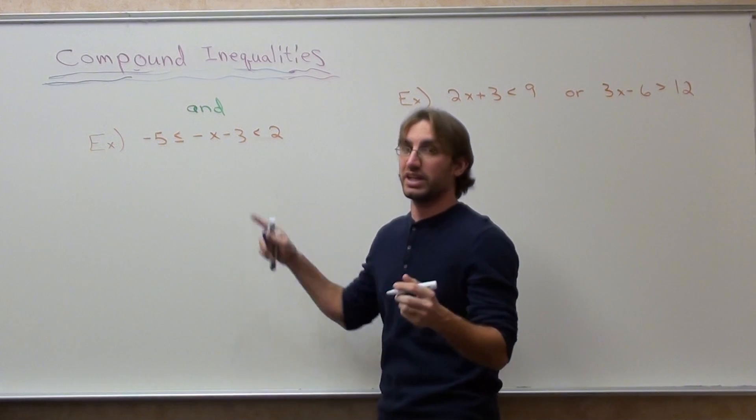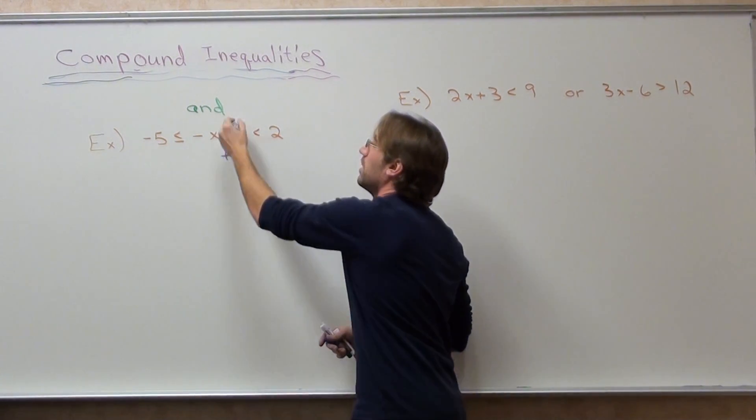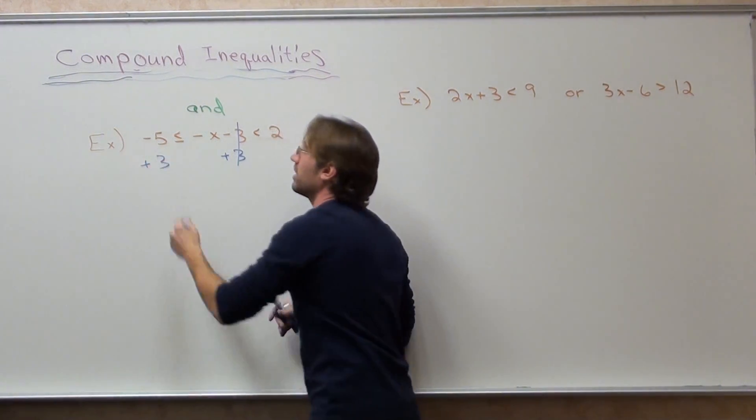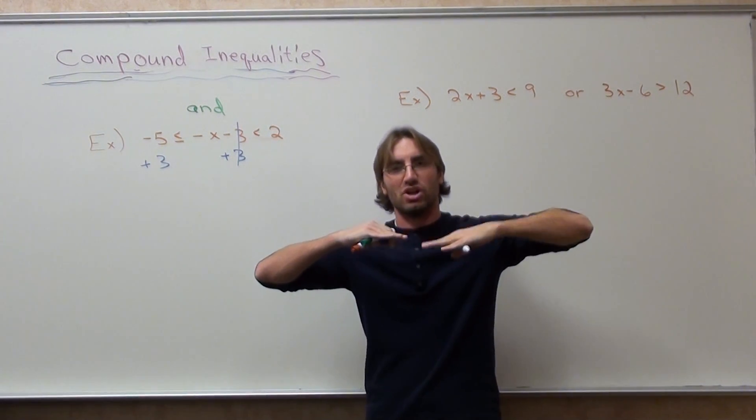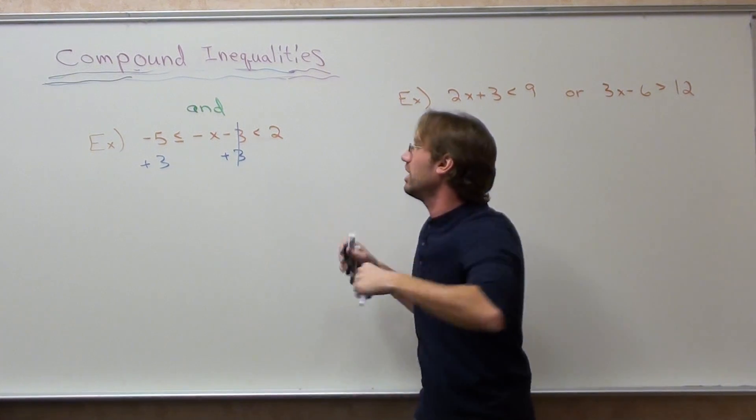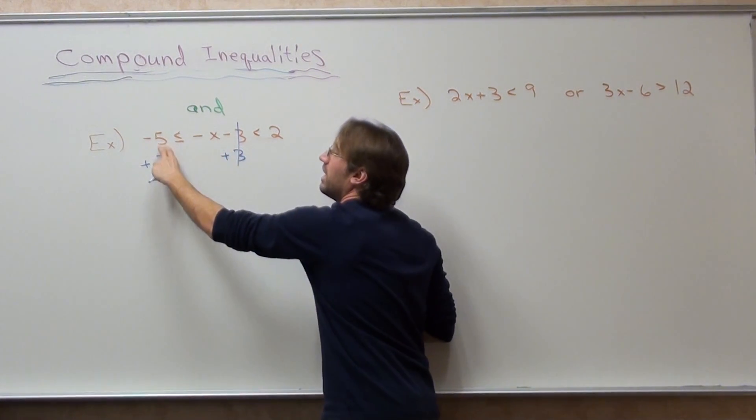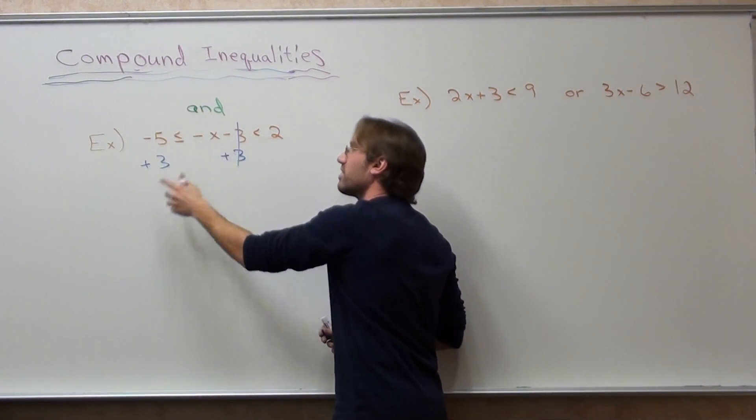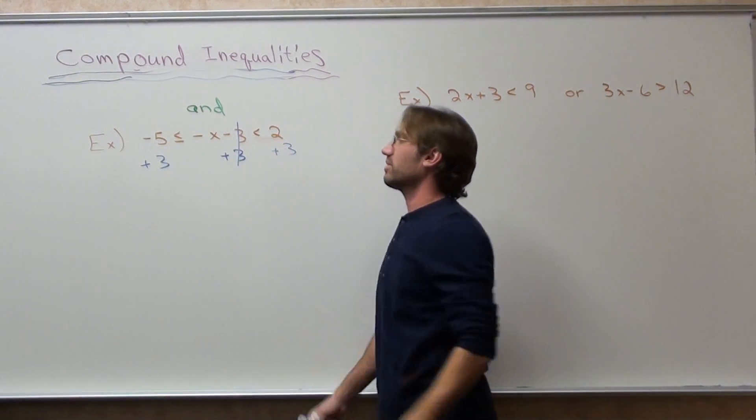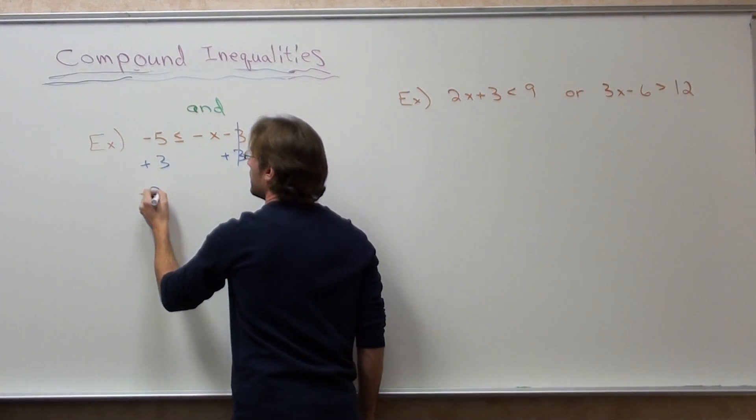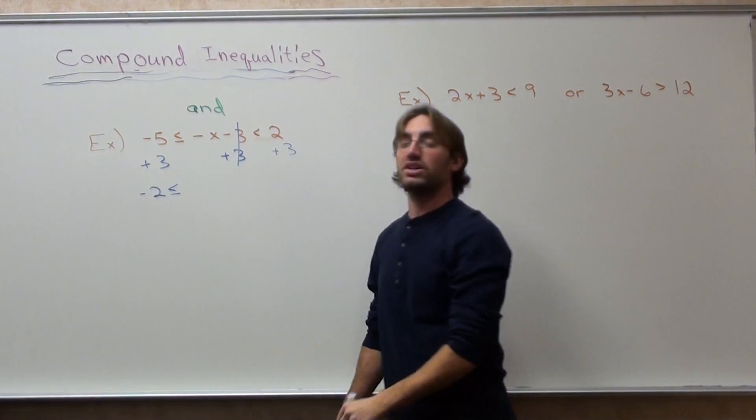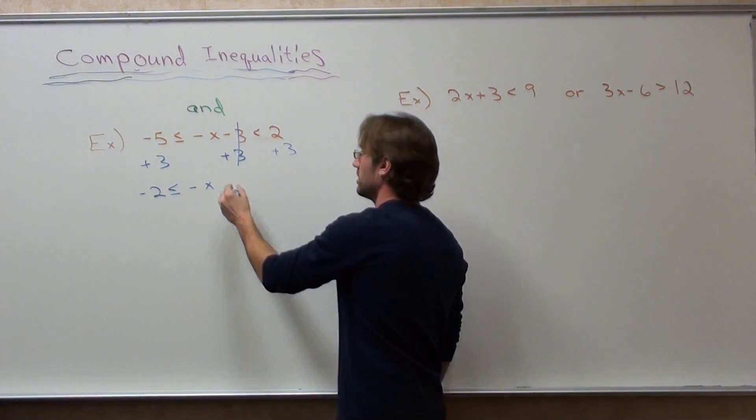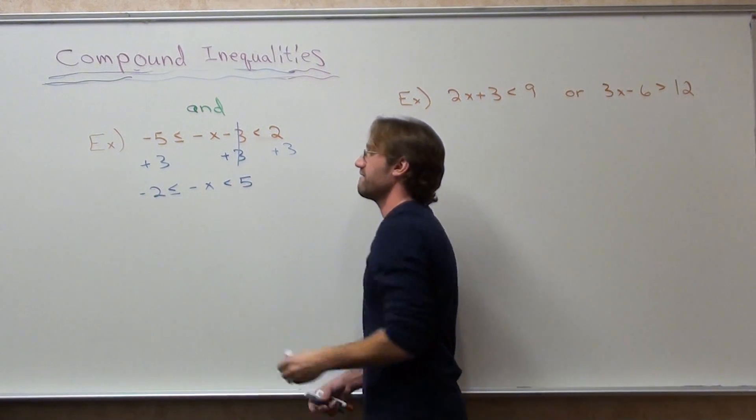So I'm going to add 3 to get rid of this negative 3. But what I do on one side of the inequality, I have to do on the other. But it's not like a two-sided seesaw. It's actually like a three-sided seesaw now. You've got to keep it balanced in the middle, on the left, and on the right. So you add 3 here, you add 3 there, and you add 3 there. So what you're left with is negative 2 is less than or equal to negative x less than 5.